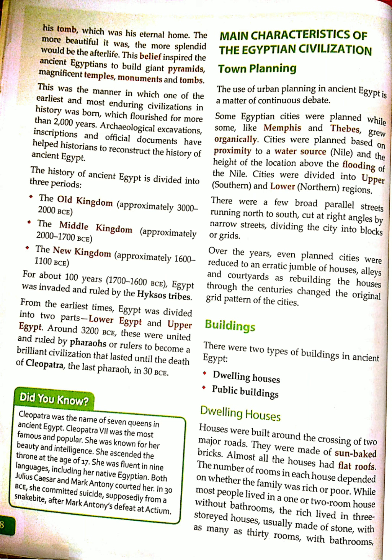The first characteristic is town planning. Egyptian cities were planned, but Memphis and Thebes were built organically. Given the flooding conditions of the Nile, cities were built with upper and lower regions. There were roads running from north to south, and narrow streets divided the city into blocks and grids. This kind of pattern we also see in the Indus Valley civilization.